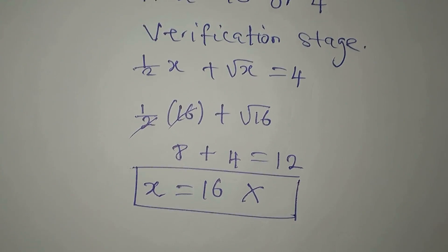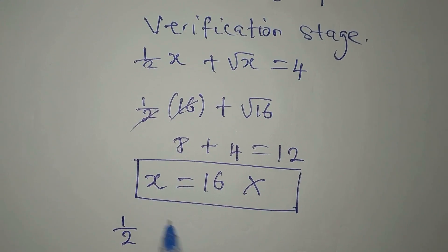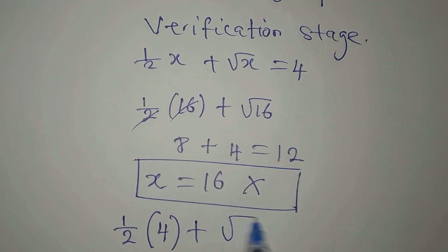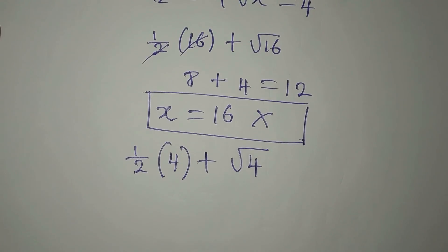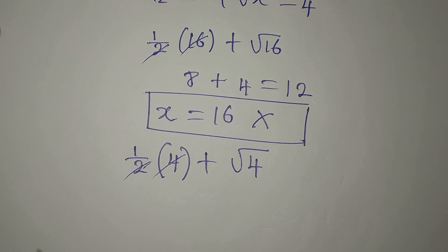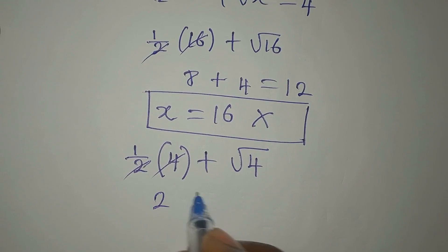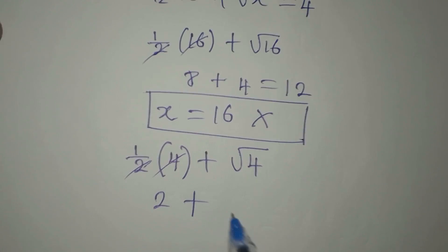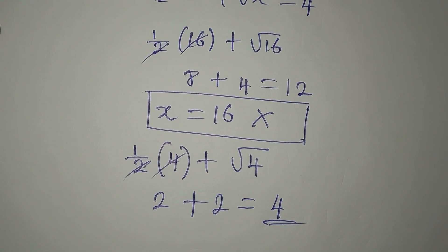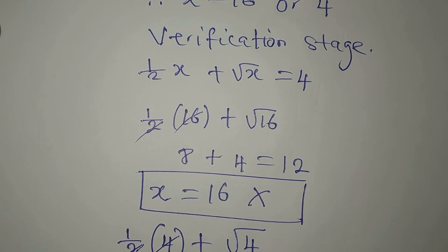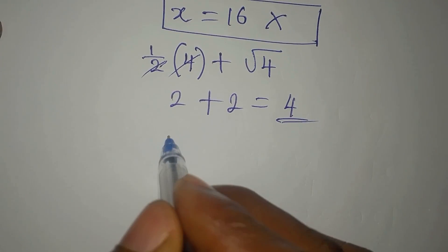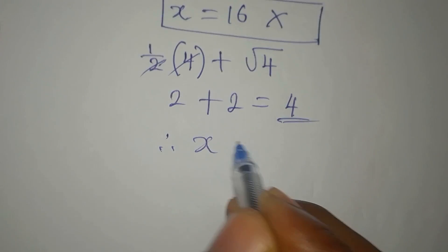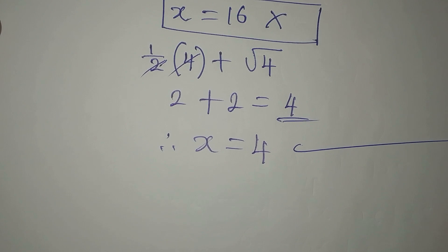Now let's put x equals 4. So we have 1 over 2 of 4 plus square root of 4. Now 2 into 4 is 2. We have 2 plus square root of 4 and that is 2. This is equal to 4 if you add, and that is what we have on the right hand side of the equation. So therefore, we conclude that x equals 4 satisfies the equation.